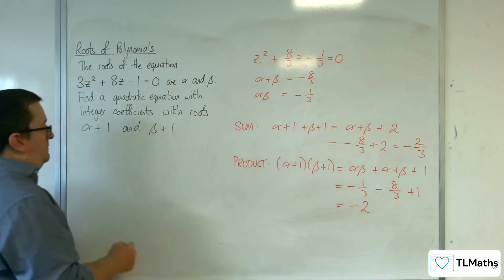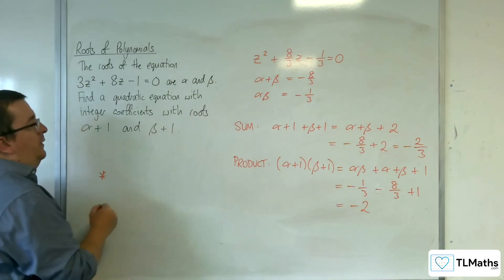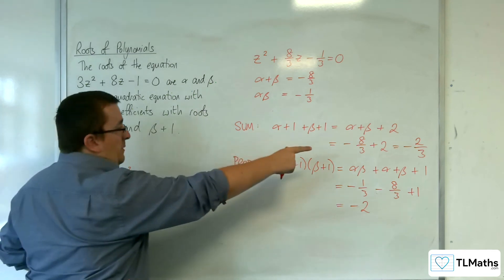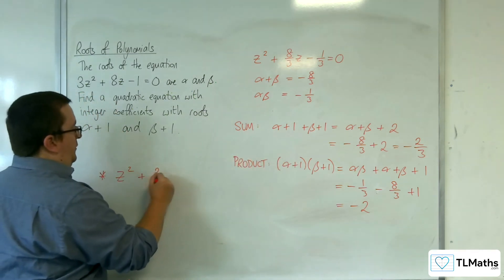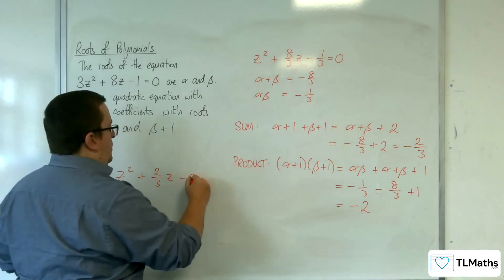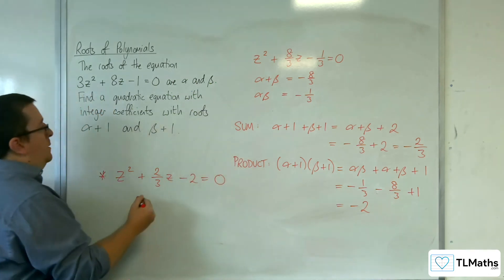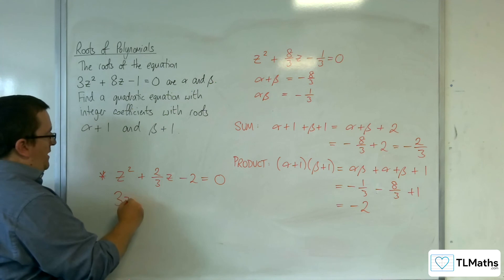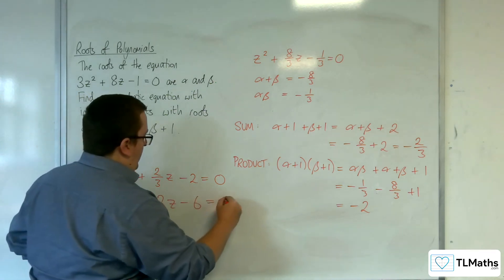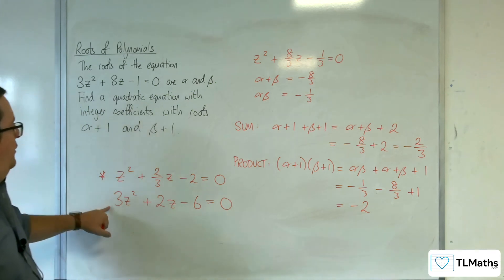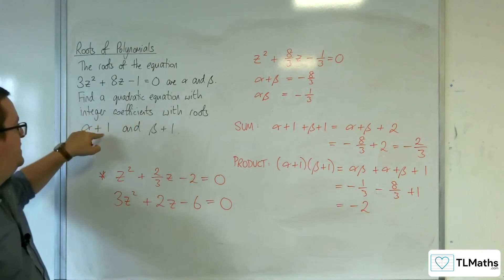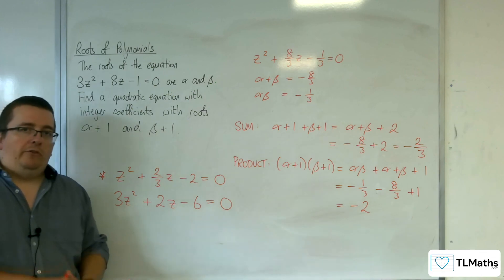So our equation that we want is z squared, take away the sum of the roots, so plus 2 thirds z, then the product, so take away 2, equals 0. Multiply through by 3, we get 3z squared plus 2z take away 6 equals 0. And this is our quadratic equation with integer coefficients that has the roots alpha plus 1 and beta plus 1.